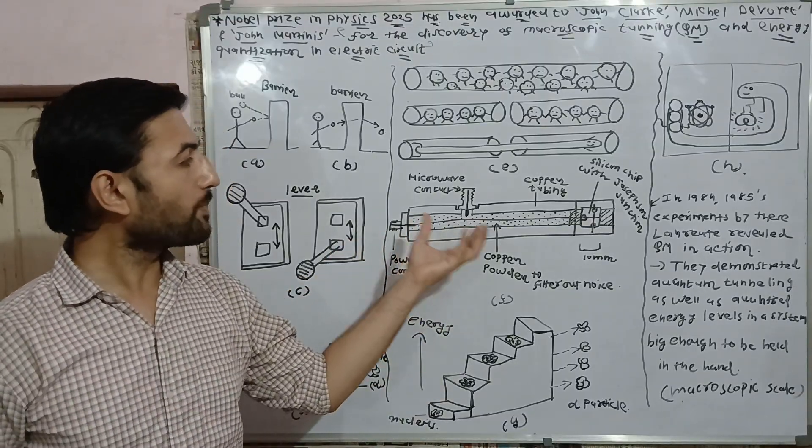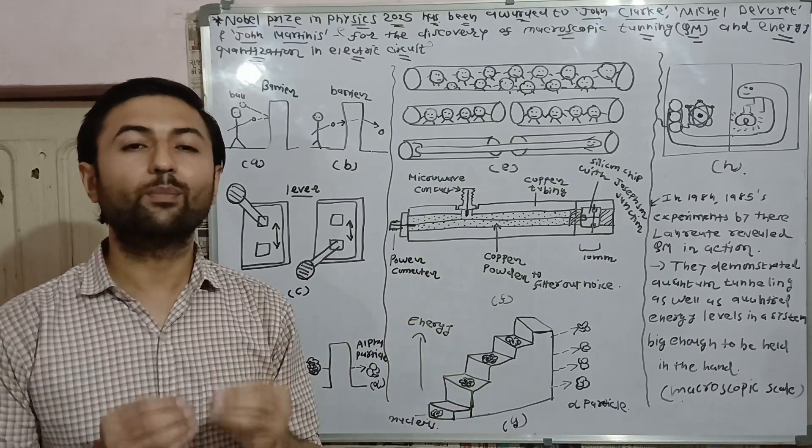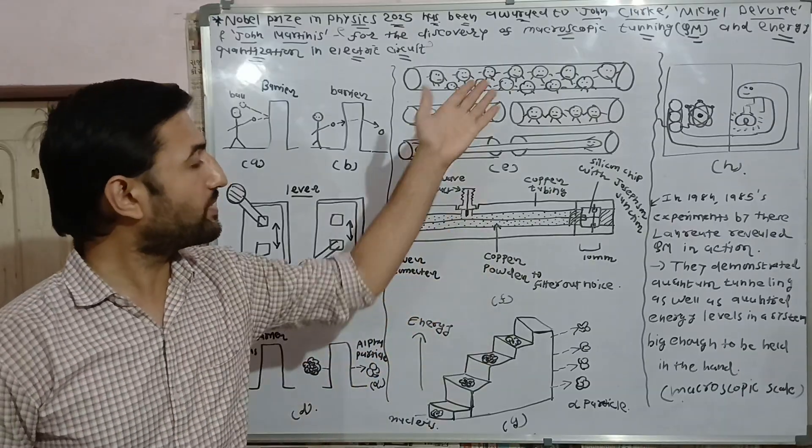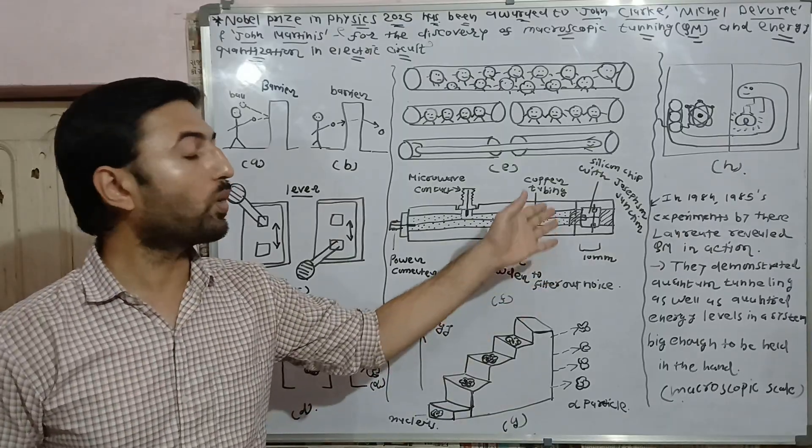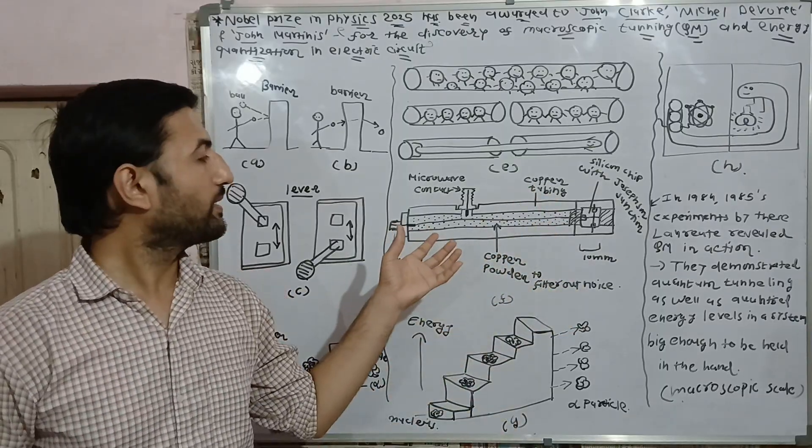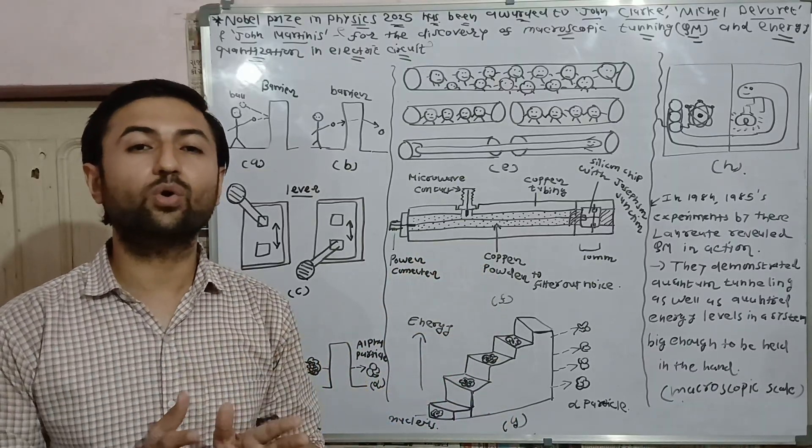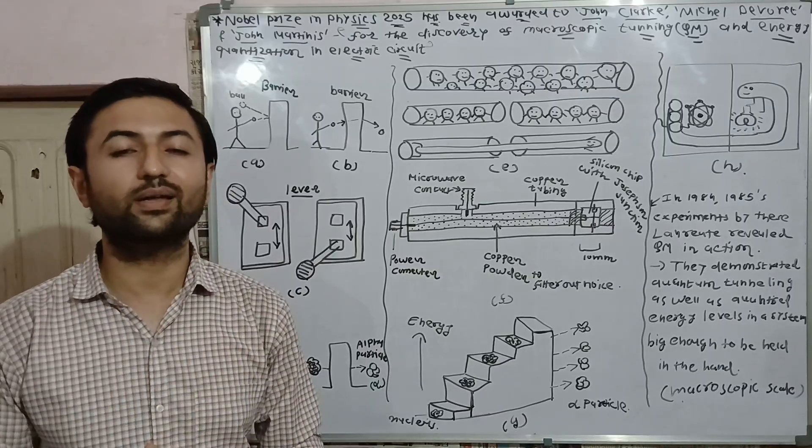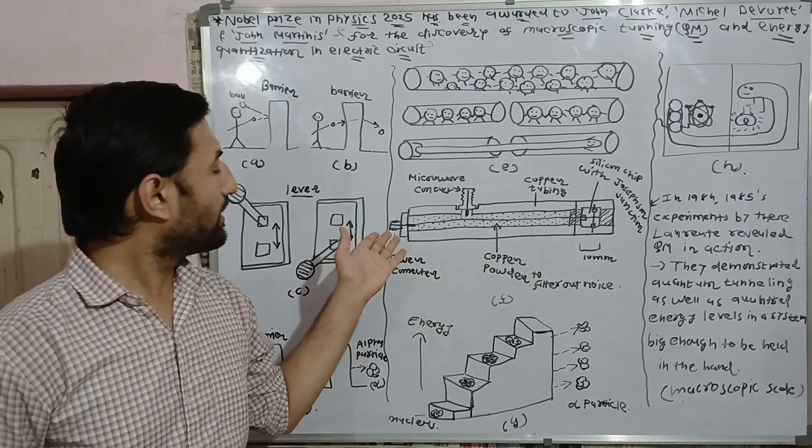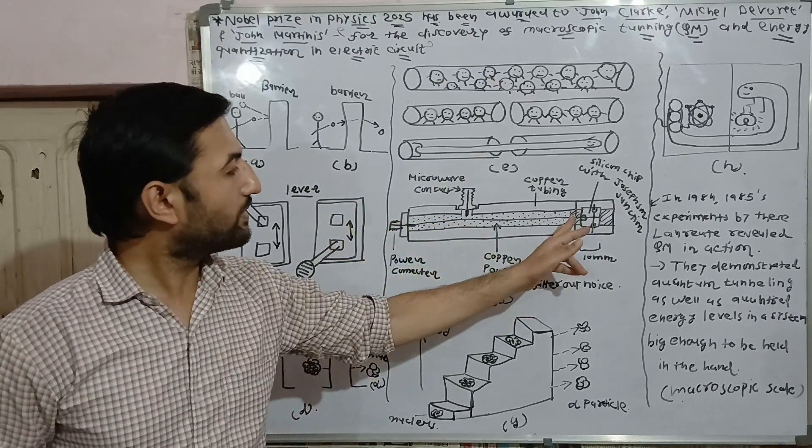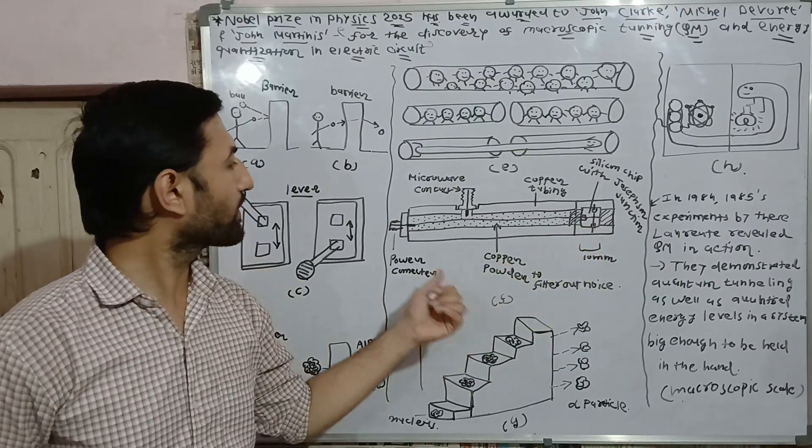What happens: previously in all electrical experiments, physicists considered few numbers of particles, while these physicists considered billions of Cooper pairs in superconducting material on the chip. So what happens is this experiment took quantum mechanical effect from microscopic scale to macroscopic scale by considering billions of Cooper pairs in the electrical circuit that I have shown here.